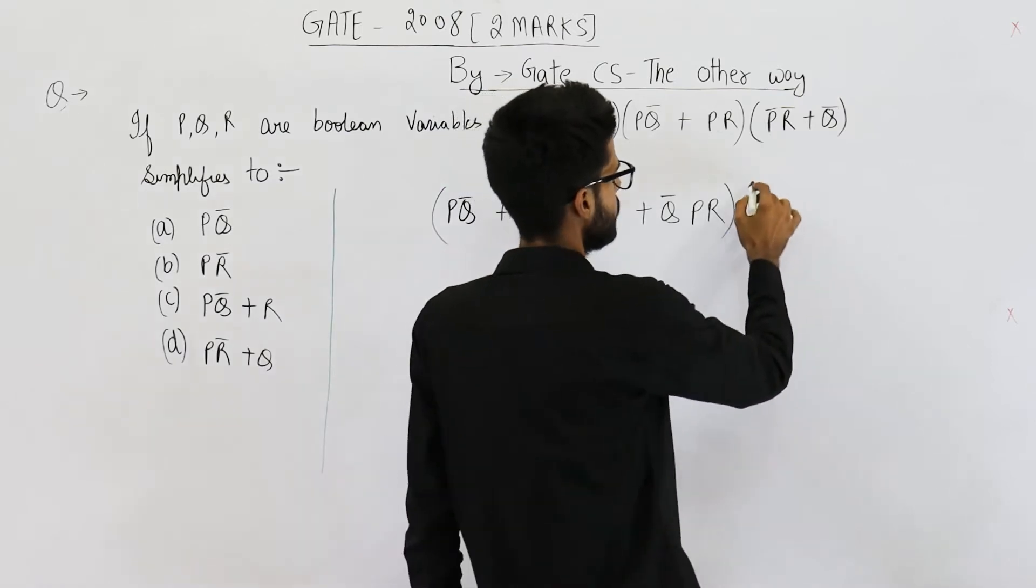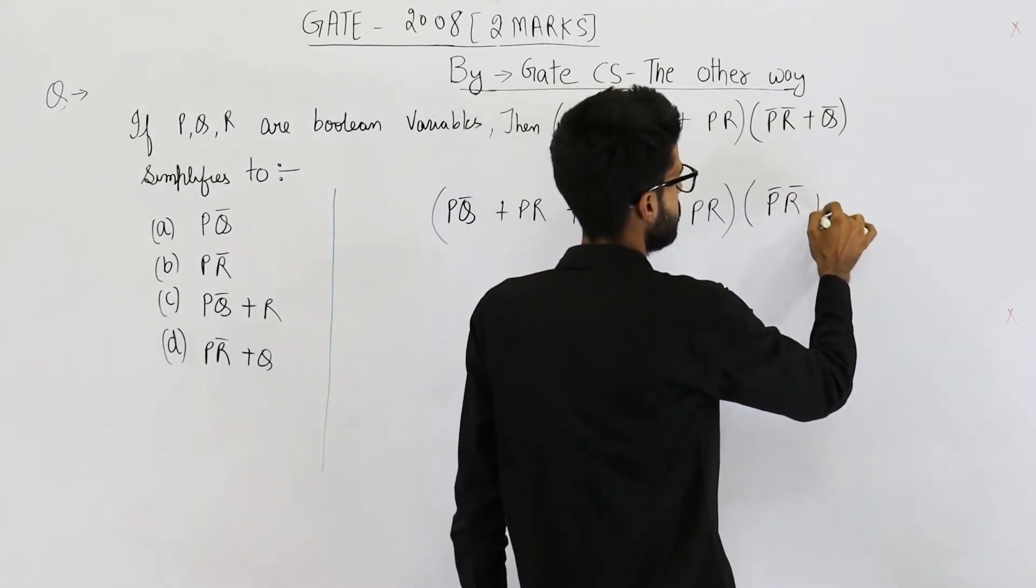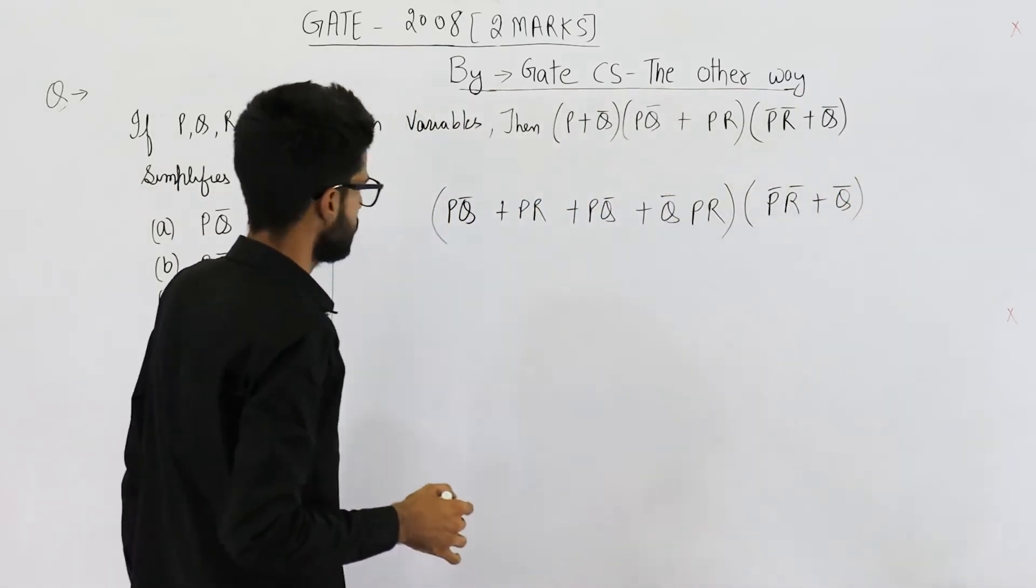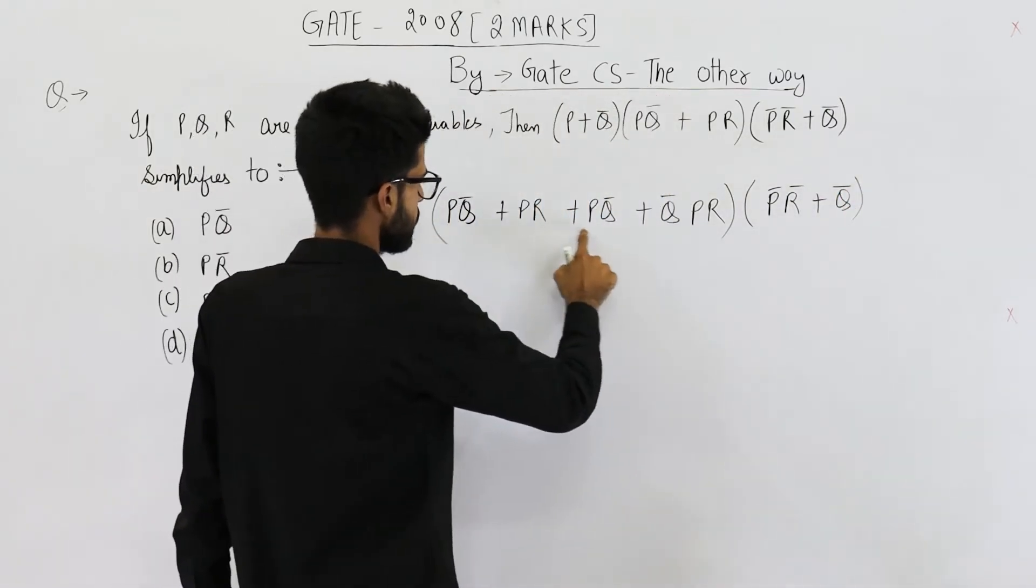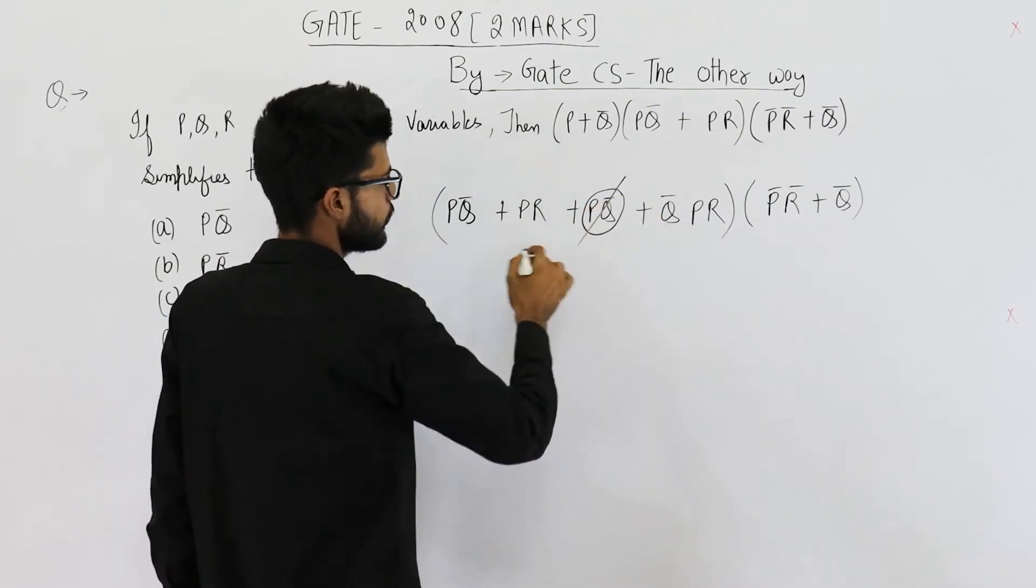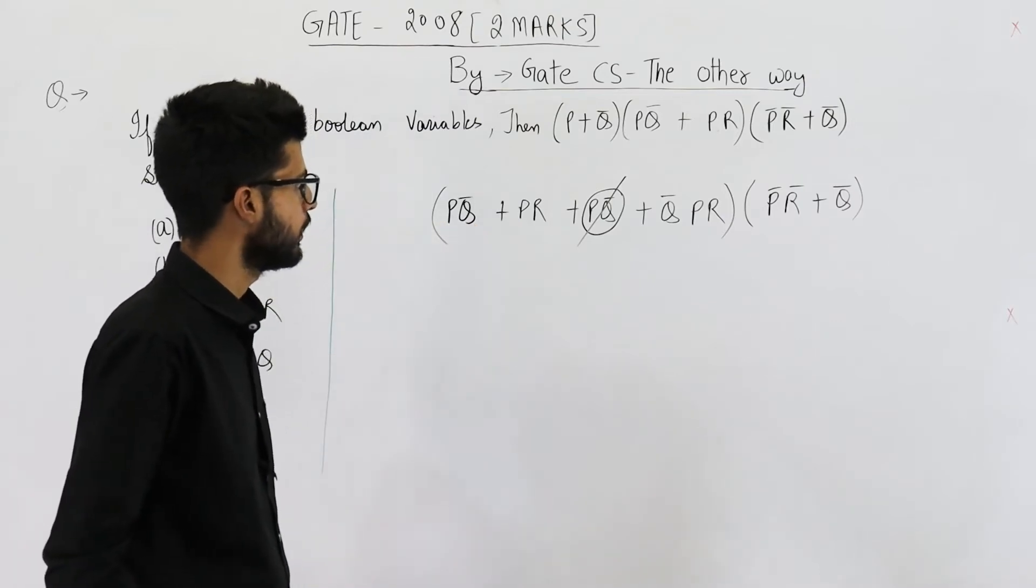Now this one will be copied as it is. This is P̄R̄ + Q̄. So this one can be deleted. We already have PQ̄ here.